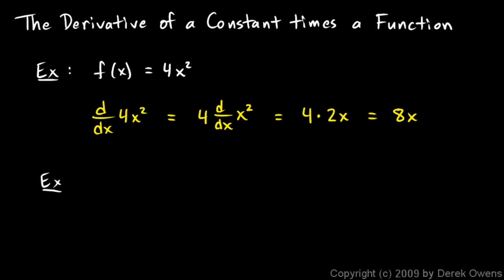So just another quick example. For example, if f of x was 3x to the 7th, then f prime of x would be what? Well this would simply be 3 times the derivative of x to the 7th, which would be 7x to the 6th. And usually you can do this step in your head, and just go straight to 21x to the 6th in this particular case.